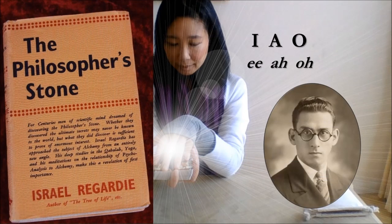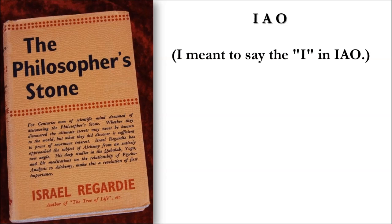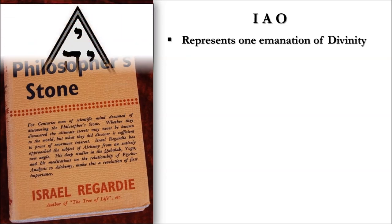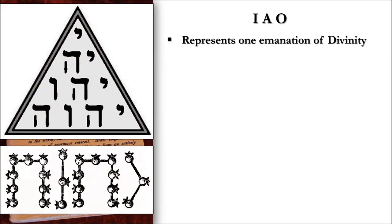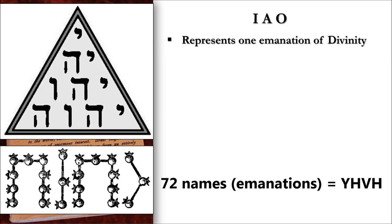Now for the Golden Dawn-based invocation to IAO, pronounced E-A-O. We'll be citing the one from Israel Rigardi's 1938 text The Philosopher's Stone. The E is pronounced like 'key,' and the O should be hummed or intoned so you can feel your throat vibrating. IAO represents one emanation of divinity — much like how YHVH (Yod-He-Vav-He) represents four emanations of the monad Holy One, or how the 72 names represent 72 emanations of the Holy One.